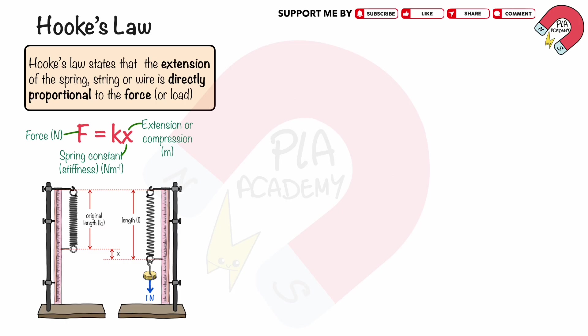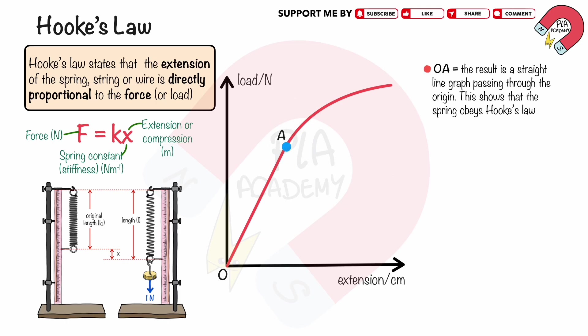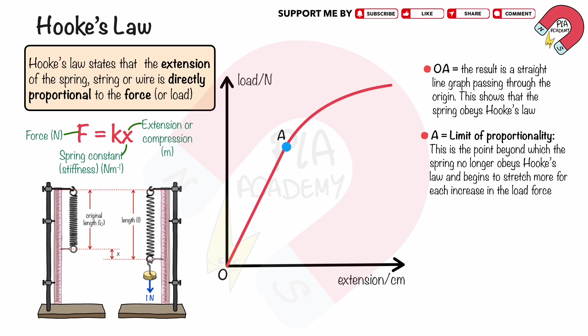An experiment can be set up to investigate the relationship between the extension of a spring and the applied force, as shown in the diagram. We then plot a graph of the load force against the extension. The section of the graph between O and A is a straight line passing through the origin. This indicates that the spring obeys Hooke's law within this region. Point A is called the limit of proportionality — the point beyond which the spring no longer obeys Hooke's law and begins to stretch more for each increase in the load force.